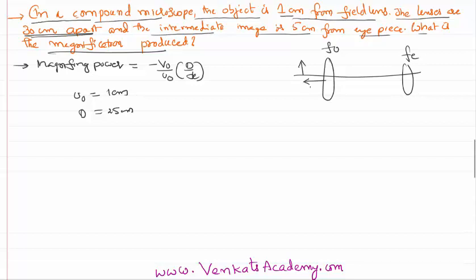So if you remember your diagram: this is fo, this is fe, this is uo, this is intermediate image vo, this is ue, this is the length of the compound microscope. So length of the compound microscope is vo plus ue, that is given as 30 centimeters.